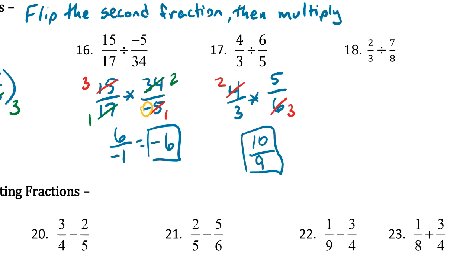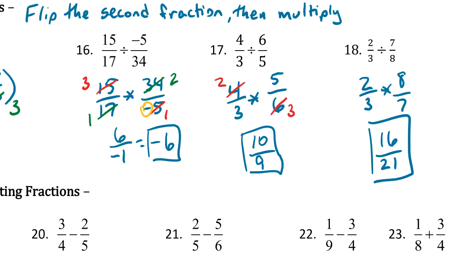Last one. Keep the first one the same, times 8 sevenths. We start looking for stuff to reduce. In this case, I don't see anything that can reduce. So we just do top times top, bottom times bottom. 2 times 8 is 16, 3 times 7 is 21. And we're done. That's all there is to multiplying and dividing fractions.